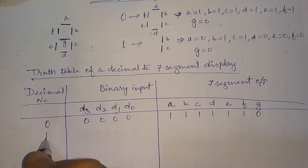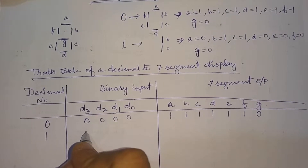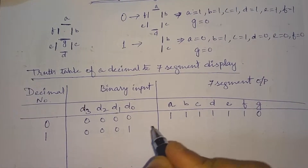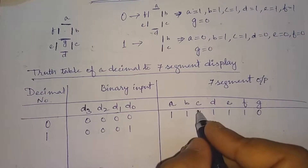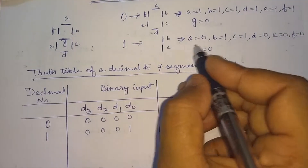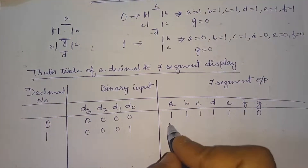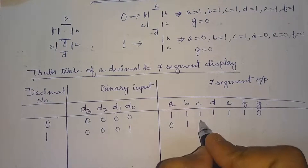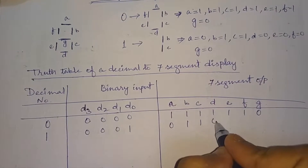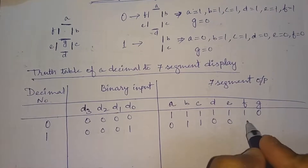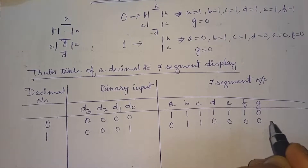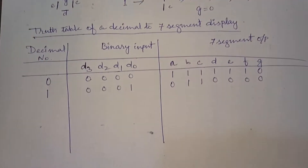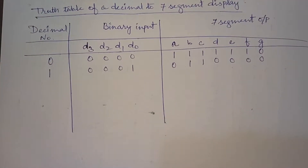And similarly for 1, the binary representation is 0, 0, 0, 1. For the digit 1, we'll have A equal to 0, B equal to 1, C equal to 1, D equal to 0, E equal to 0, F equal to 0, and G equal to 0. And so on — now we'll make the complete truth table.